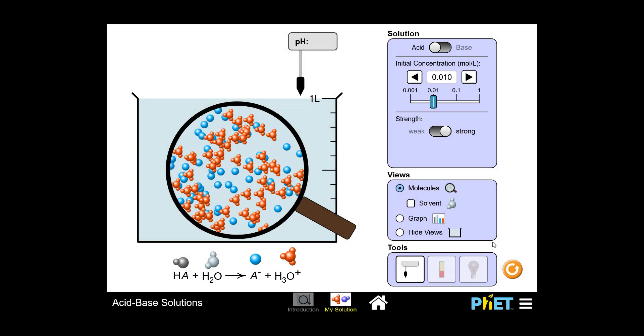In the first half of this screencast, we discussed the two major classifications of acid strength: strong acids and weak acids. In reality, it's a little bit more complex than that. Let's flip back to the weak acid for this portion of the video.